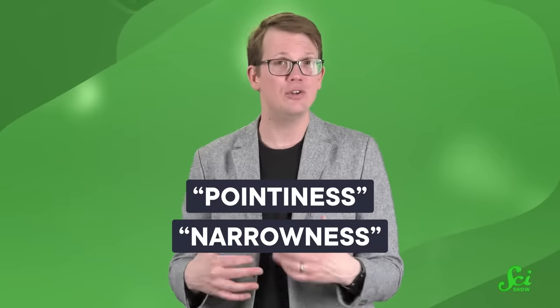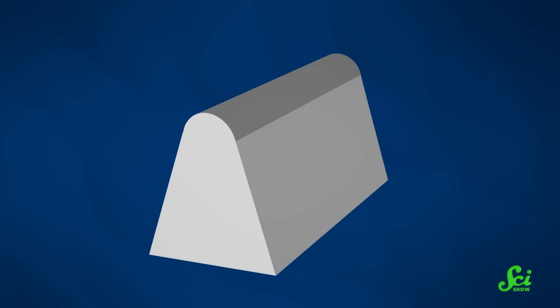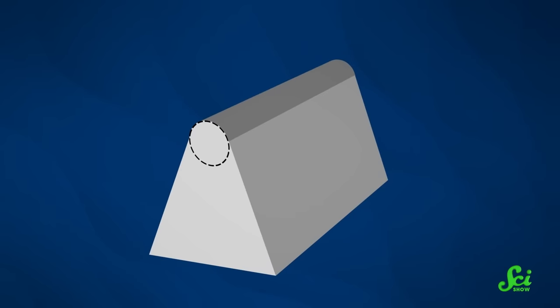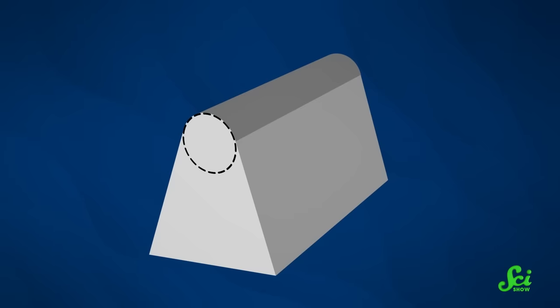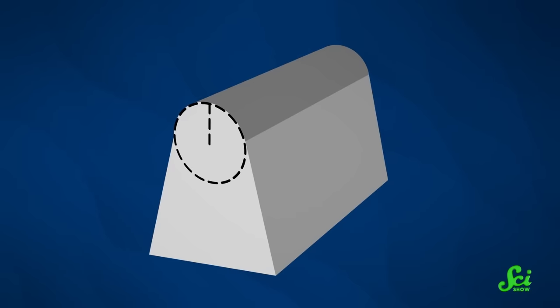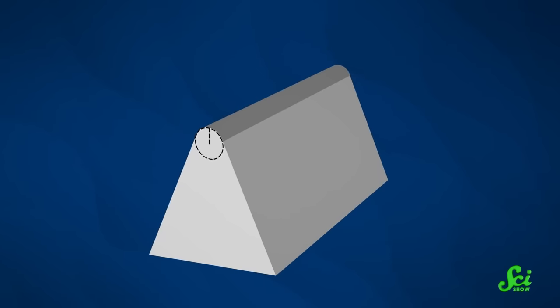So scientists have created specific measures of pointiness and narrowness to try and define sharpness. Starting with the former, if we zoom in on the edge of a blade called the apex, the tip of the wedge doesn't shrink to an infinitely small point. Instead, it ends in a tiny curve. Think of that curve as forming part of a circle. The radius of that circle can tell us how tight the curve is, which ultimately defines how small the edge of the blade is. There's a word for this. It's called the edge radius, and it's the geometric way to describe the pointiness of a knife's edge. A smaller edge radius means a tighter curve, closer to an ideal, perfectly pointy shape.